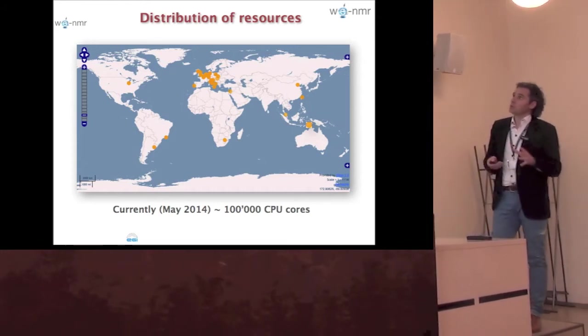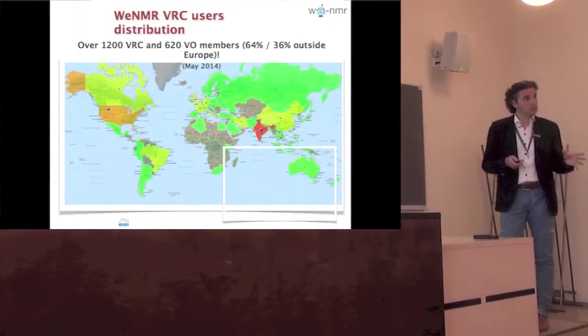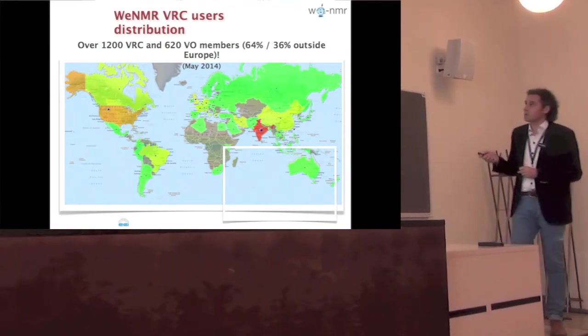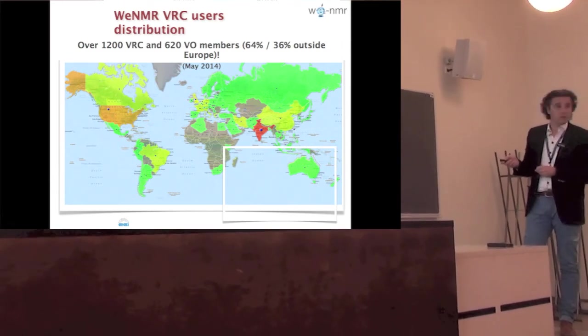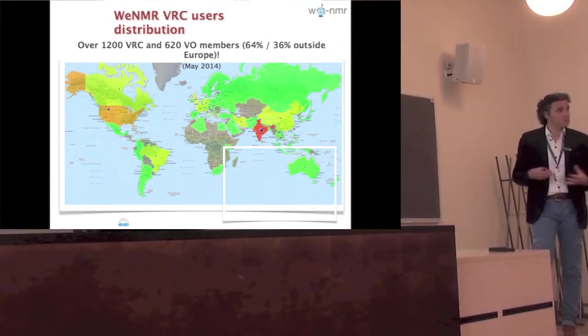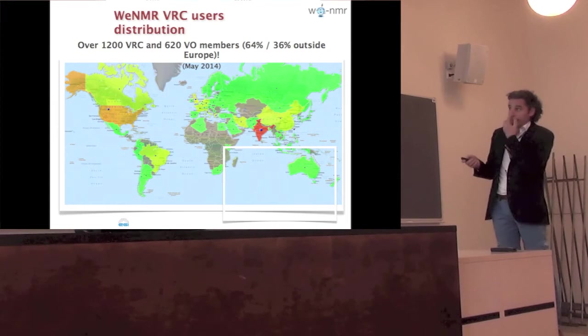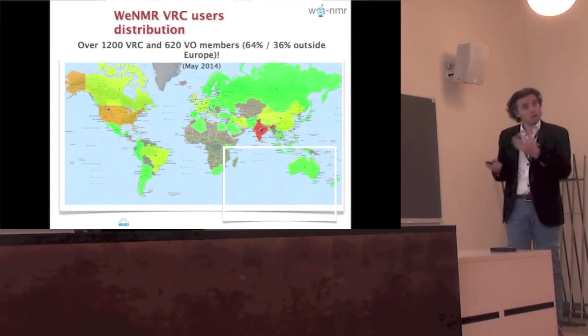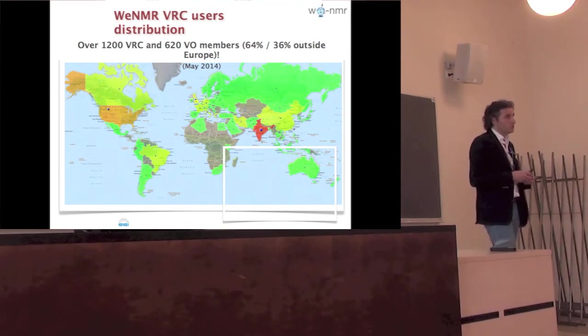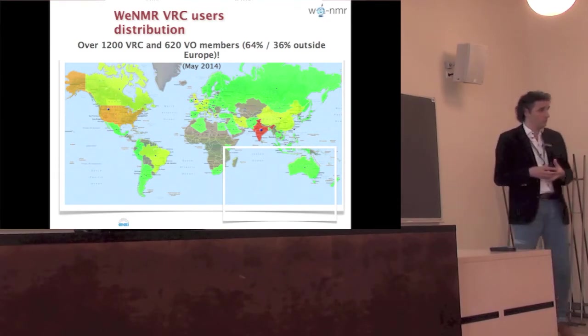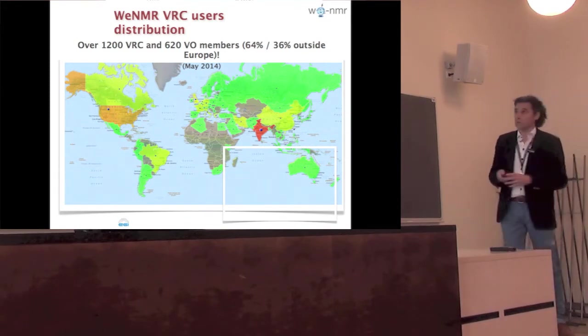This is a distribution of our user community, the virtual research community members. You see they are well represented. The top country in number of members is India with a lot of bioinformatics research, then the US, then Europe. Two-thirds of the users using our resources are coming from outside Europe. We are really a worldwide community in that respect.